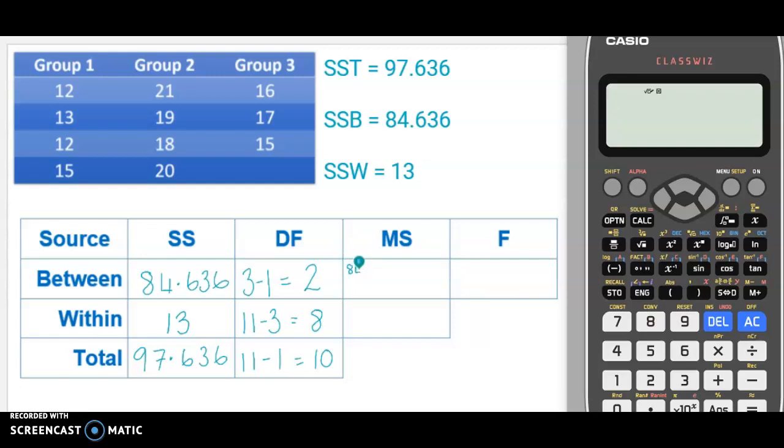So 84.636 divided by 2. I'm just going along that column. I'm going to use my calculator. 84.636 divided by 2 equals, and I want that as a decimal please, 42.318.